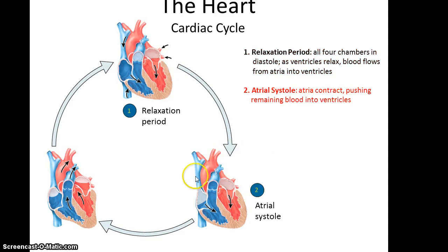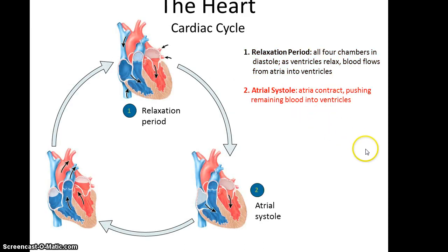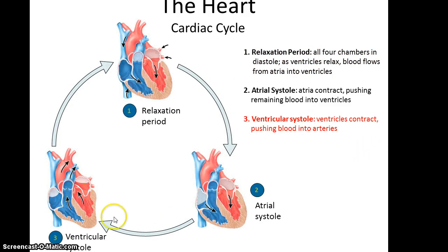Then you have the atrial systole. This is when the atria contract, pushing the remaining blood into the ventricles. This matches up with the signaling from the sinoatrial node. Then you have what's referred to as the ventricular systole, which is when the ventricles contract, pushing the blood out through the pulmonary trunk or the aorta, depending on which ventricle the blood is coming from.